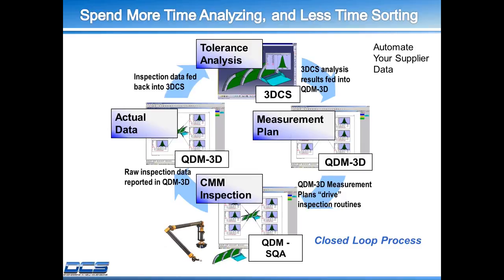Once the supplier sends the SQA report back to the OEM, there are two things the OEM can do. First, make quality decisions — approve the batch, reject parts, send for rework. Second, use that actual shop floor data for future simulations in 3DCS. The first time you run 3DCS, you don't have any shop floor data, so you use Monte Carlo simulation for a theoretical analysis. But now you have more realistic data from your inspection device which you can feed back to 3DCS to run future simulations — giving you even more realistic results. That is the closed loop process.